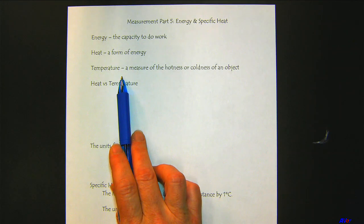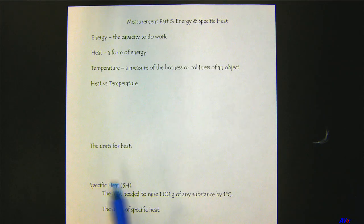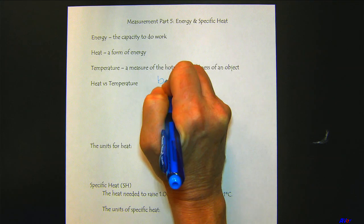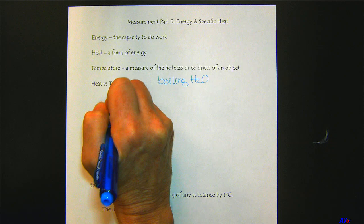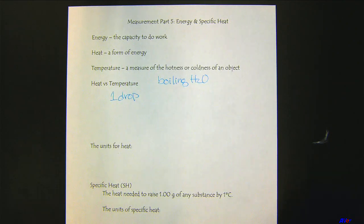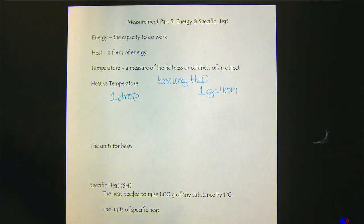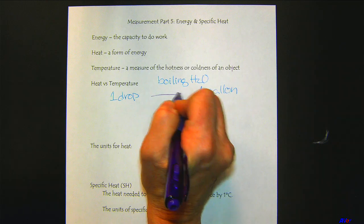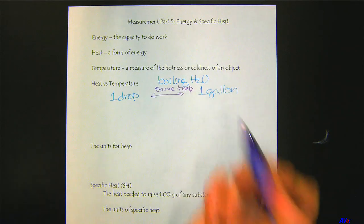And then we need to look at temperature. So we've already looked at the units of temperature, and we know it's a measure of hotness or coldness of an object. But heat and temperature can be used interchangeably, and we don't want to do that. We want to discern those differences. So let's think about some boiling water. If we have boiling water, we could have one drop of boiling water or we could have a gallon of boiling water. In this sense, they're both boiling, so they're the same temperature, about 100 degrees C.